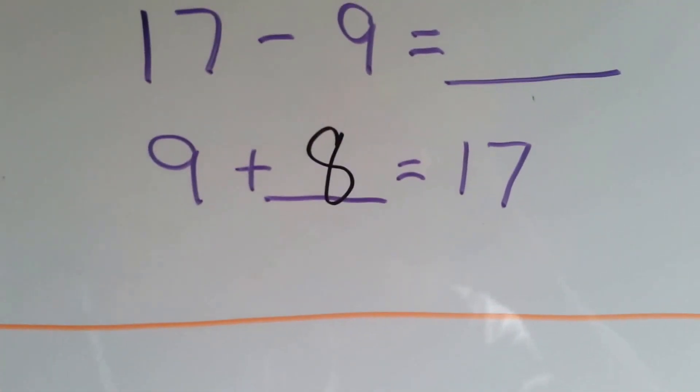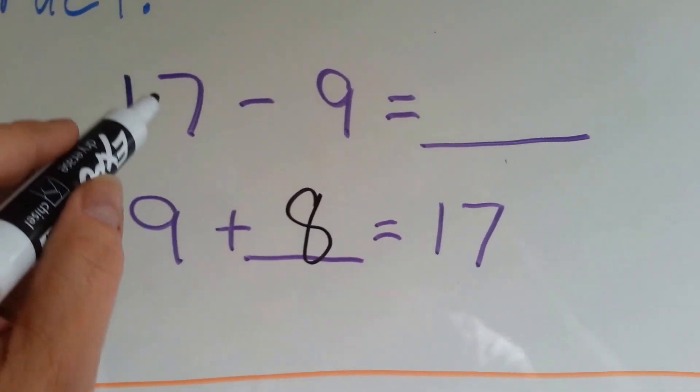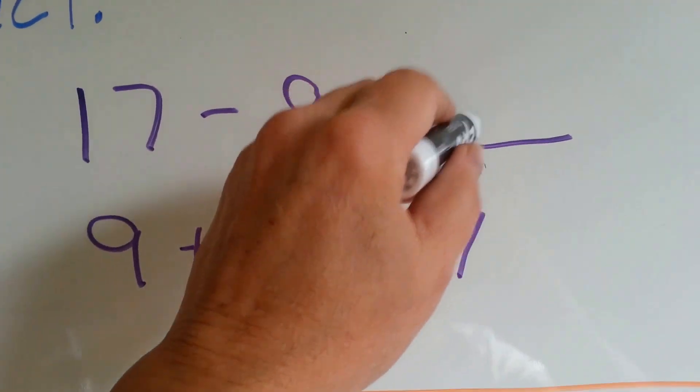9 plus 8 equals 17. So, 17 take away 9 equals 8.